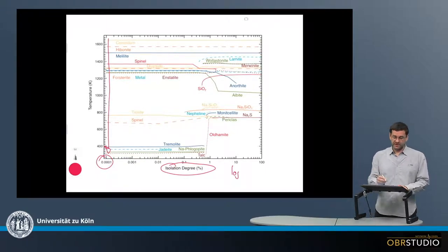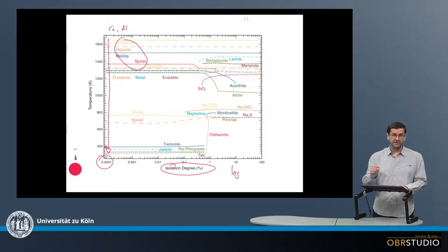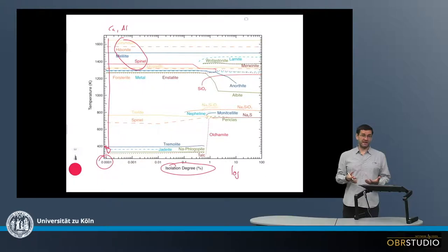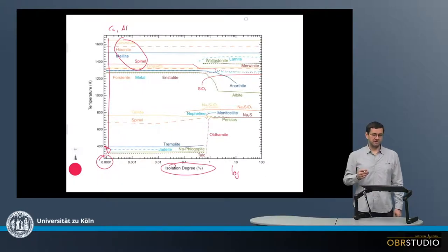Now the first minerals to condense are rich in refractory elements, something like calcium and aluminum, so corundum, hibonite, melilite, spinel, and so on. So it is material to find then also in calcium-aluminum-rich inclusions, so CAIs, but also of course in chondrules.